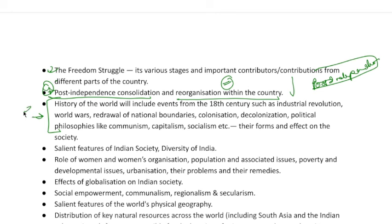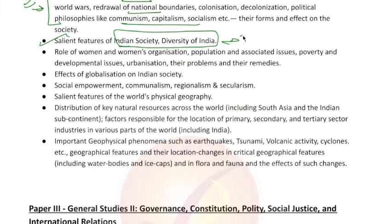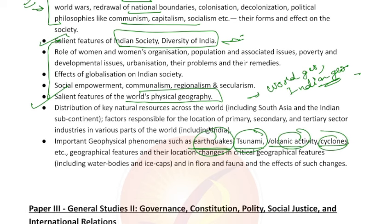Then, world history comes in GS1 — world history is not in your prelims, it is in your mains. Indian society and diversity of India is also there — for sociology optional students they may not need to study others as much, but you still need to study a little. And then your world's physical geography — earthquake, tsunami, volcanic activity, cyclones — you have to know each keyword in depth: what types, causes, and impacts.